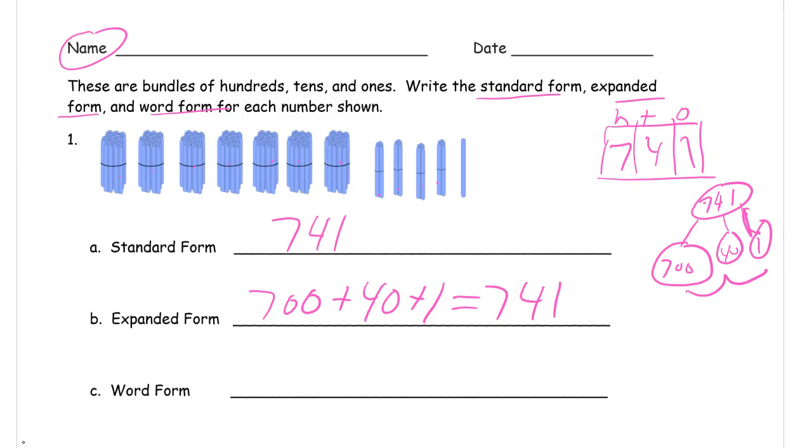And then word form, we need just - if you read this out loud you would say seven hundred forty-one, so I'm going to write that out all in words. Seven hundred forty-one, just like that. And here, if you don't remember how to spell hundreds, it's right up here. Tens and ones usually everybody can remember, but they're there in case you can't.